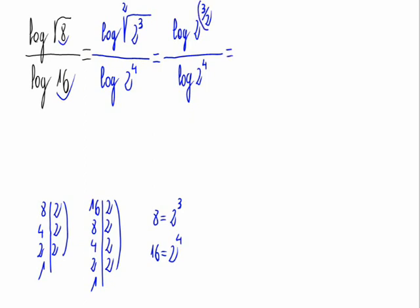Using the logarithmic properties, the exponent can go in front, multiplying. So, it would be 3 halves times the logarithm of 2, and the denominator would be 4 times the logarithm of 2. As we have the logarithm of 2 in the numerator and on the denominator, we just cross them out.